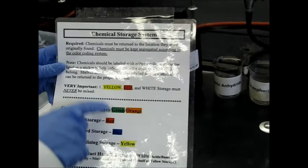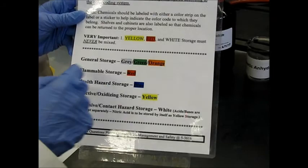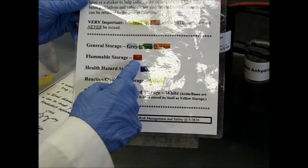So here one more thing we'd like to inform you is that we are labeling each bottle with this color code. And if they are yellow and red, basically they are very important. White storage must never be mixed. General storage is like gray, green, and orange.